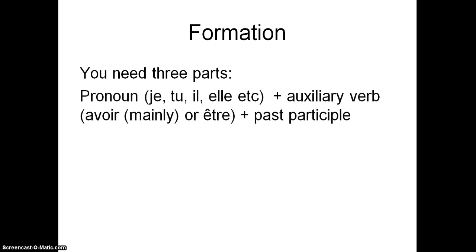So how do we form it then? We need three parts to it. We need the pronoun - je, tu, il, elle, nous, vous, ils, elles - and then we need one of the auxiliary verbs, and there are two: avoir is the main one, or être, which is used sometimes, and then a past participle.